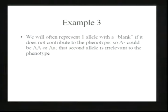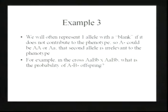In many cases, we'll represent an allele with a blank, meaning the allele present in that slot doesn't matter as far as the phenotype is concerned. A big A blank could be big A, big A or big A, little a — the phenotype is still going to be the same if it's a strict dominant-recessive relationship. So if we have the cross big A, little a, big B, little b crossed with big A, little a, big B, little b, what's the probability of big A blank, big B blank offspring? Here you're going to have to apply both the OR rule and the AND rule.